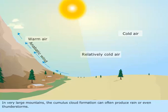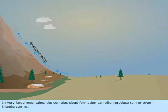In very large mountains, the cumulus cloud formation can often produce rain or even thunderstorms.